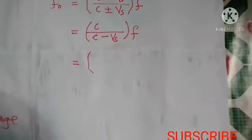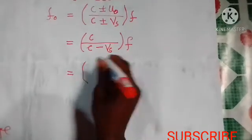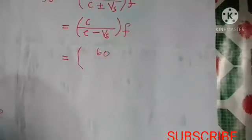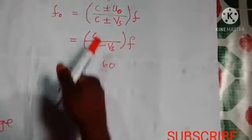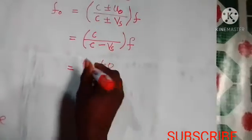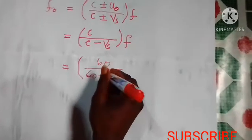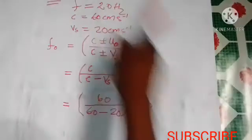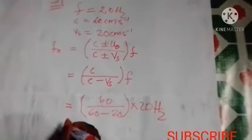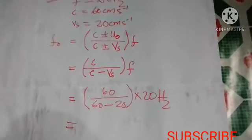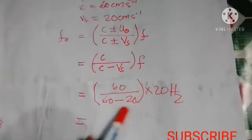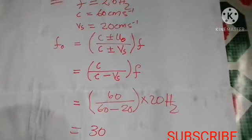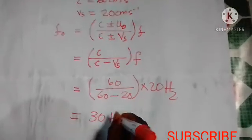Substituting the values: the speed of the wave is 60 cm/s — there is no need to convert because cm/s will cancel with cm/s — divided by 60 minus 20, all multiplied by 20 Hz. So we have 60 divided by 40, times 20 Hz. Computing this carefully, we get 30 Hz.